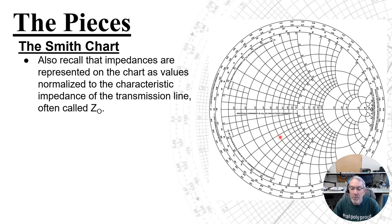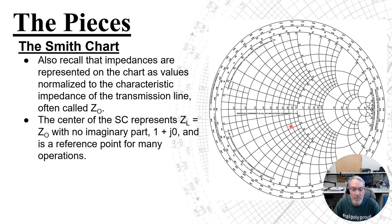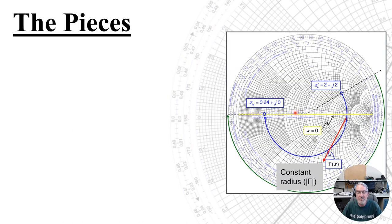Also recall that impedances are represented on the Smith chart as values normalized to the characteristic impedance of the transmission line, often called Z sub O. So this center point right here represents our load impedance equaling the characteristic impedance and no imaginary part — that would be 1 plus J0 right there — and it's a reference point for many of our operations.